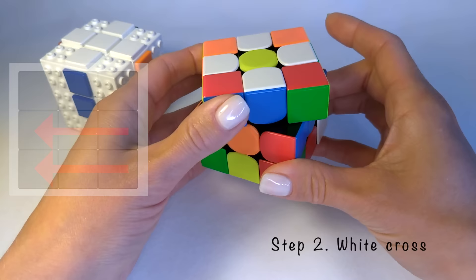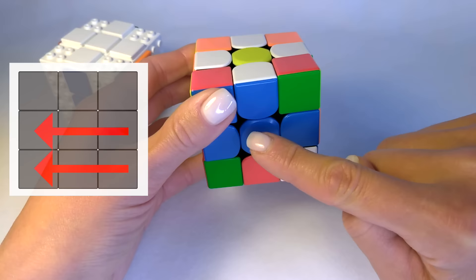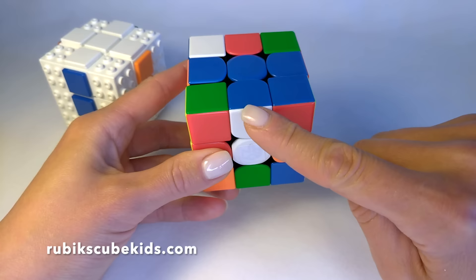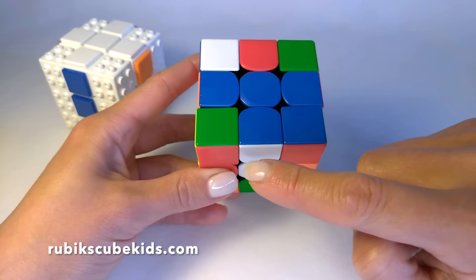We are looking for a blue center. Now the blue edge is corresponding with the blue center. Let's turn the front side clockwise twice. One. Two. As you can see, that blue and white edge fits between white and blue centers. It's right position of the edge.